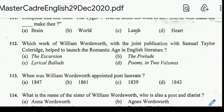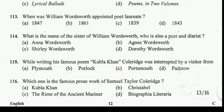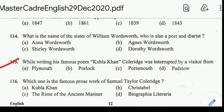Number 114: what is the name of William Wordsworth's sister who is also a poet and diarist? Correct answer: option D, Dorothy Wordsworth. Number 115: while writing his famous poem Kubla Khan, Coleridge was interrupted by a visitor. Correct answer: option B, a person from Porlock.